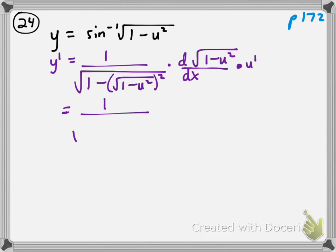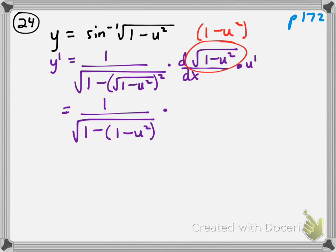We have 1 over the square root of 1 minus u squared. The derivative of radical something — let's write it as 1 minus u squared to the 1/2 — would be 1/2 multiplied by (1 minus u squared) to the negative 1/2, multiplied by the derivative of 1 minus u squared, which is negative 2u times u prime. This is getting quite messy — the 2s cancel.